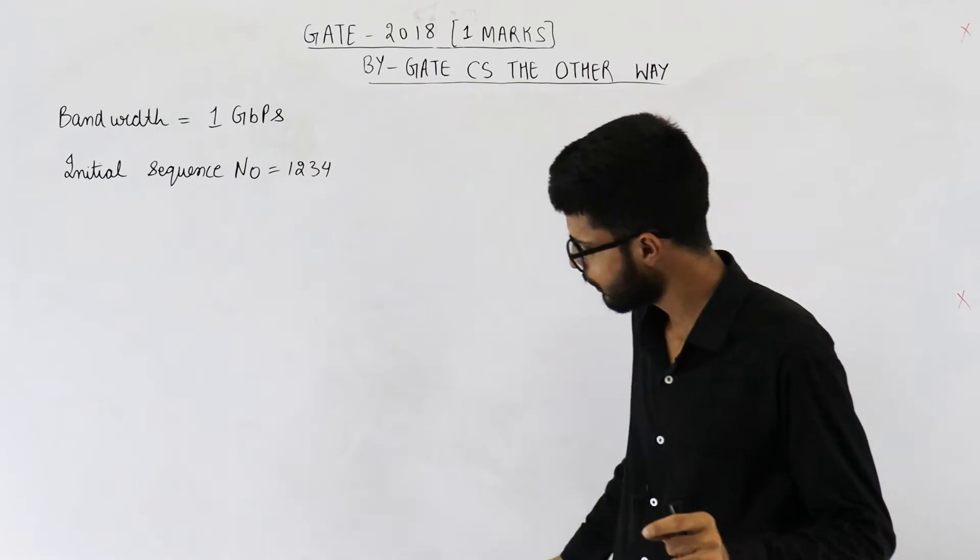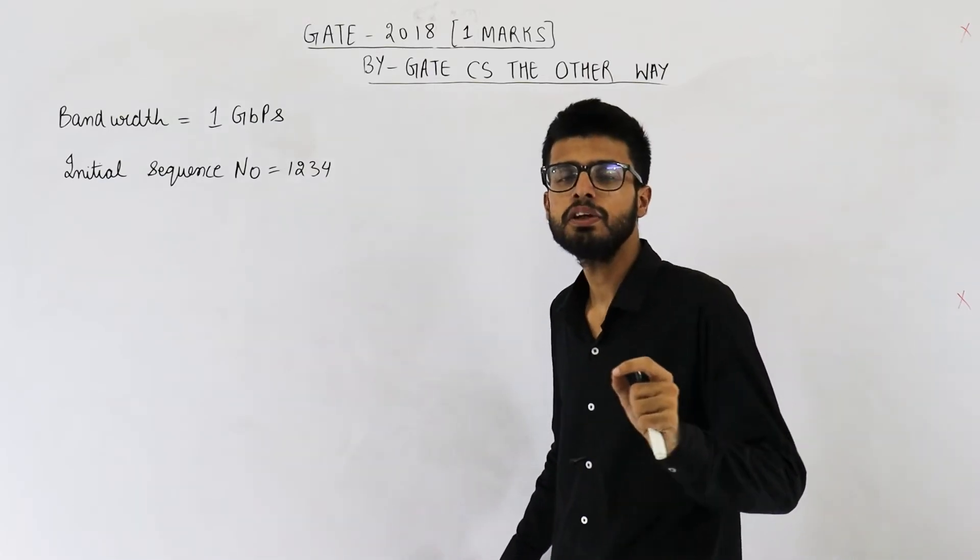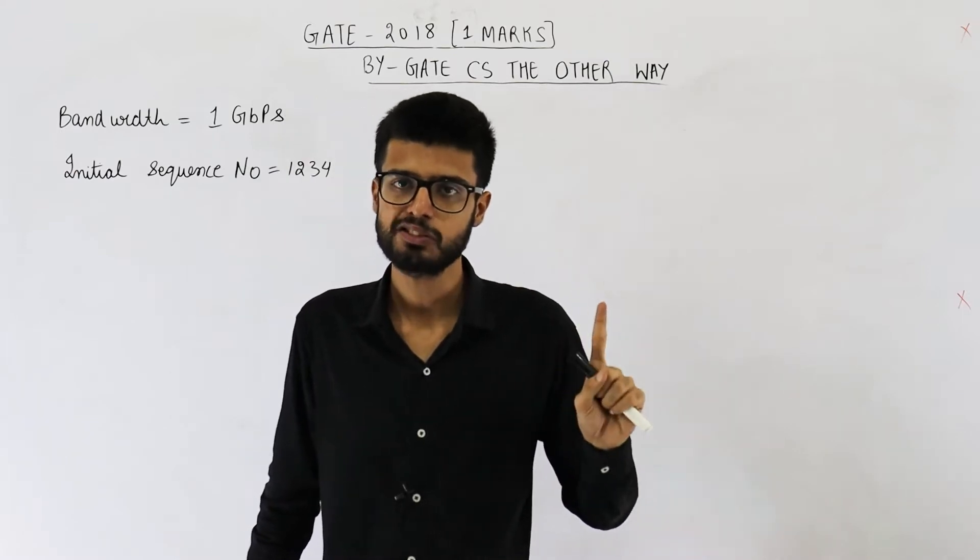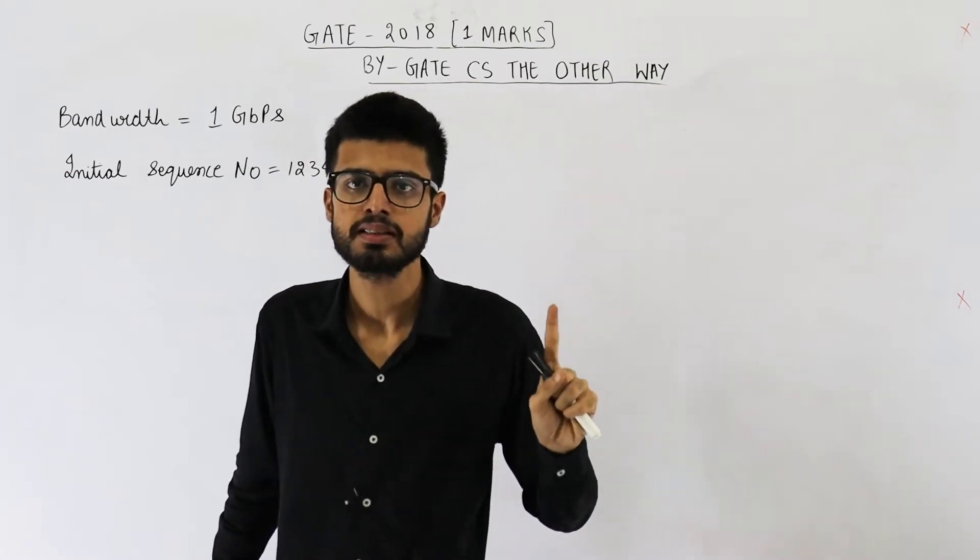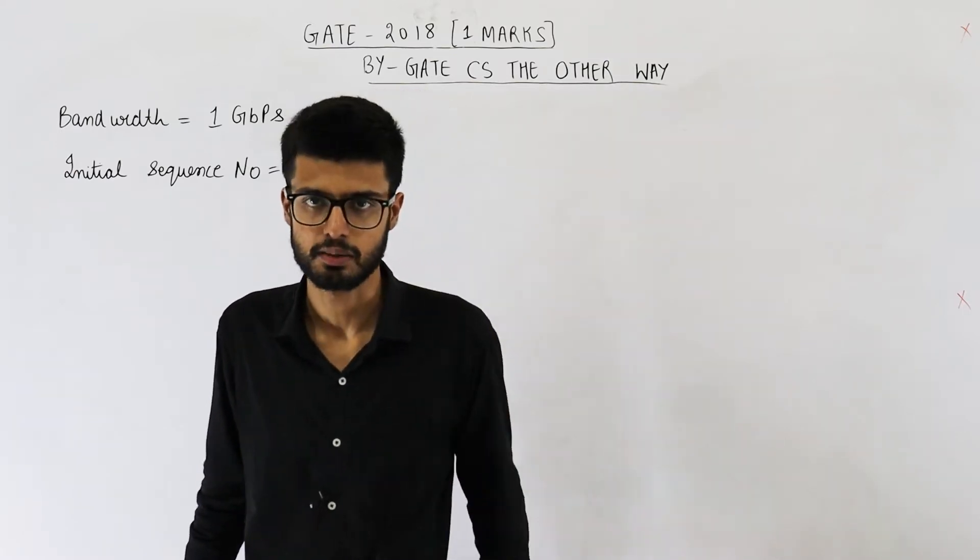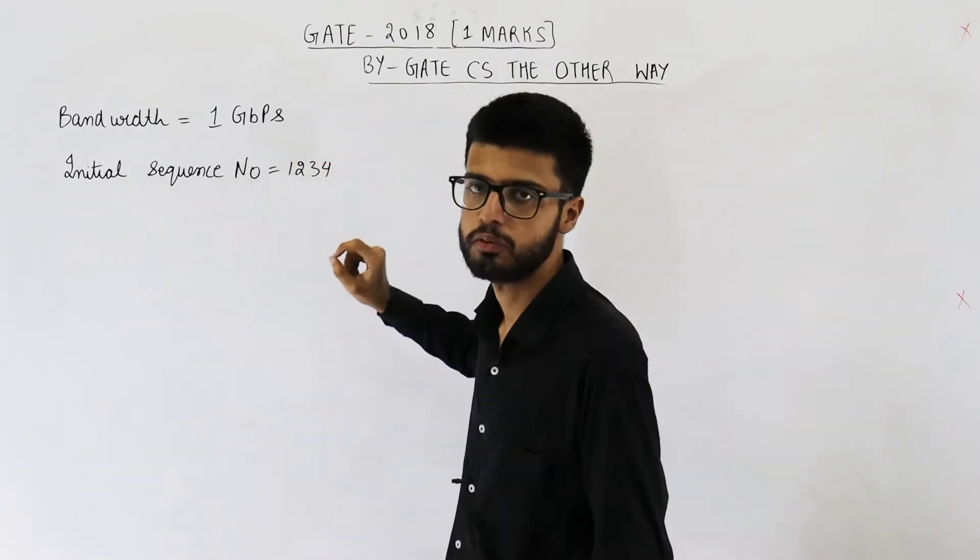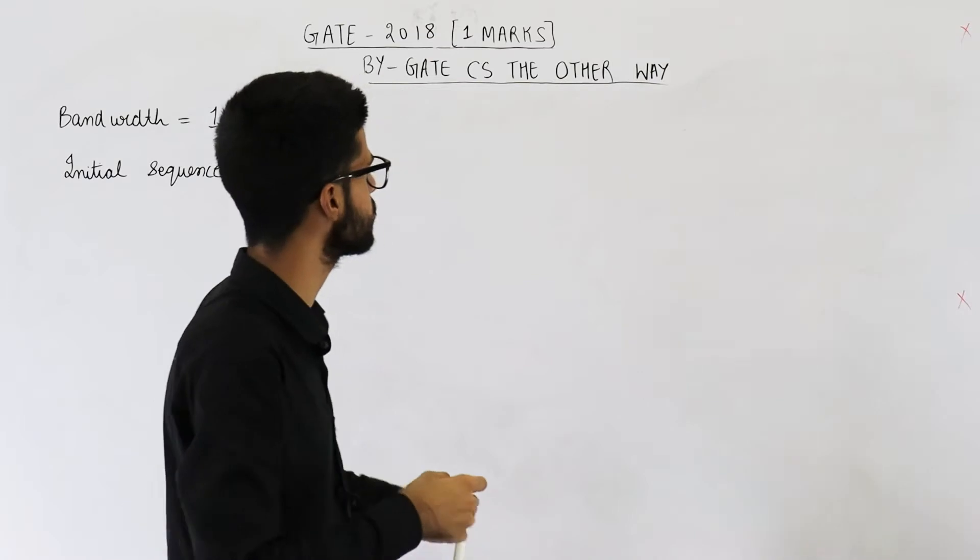Now you very well know that TCP uses a random initial sequence number. That means first byte of data will be given a sequence number that is chosen at random. And for this question, it is 1234. So random initial sequence number is 1234.